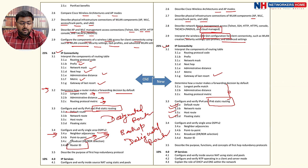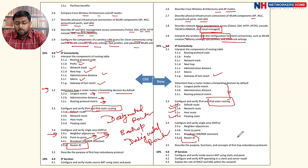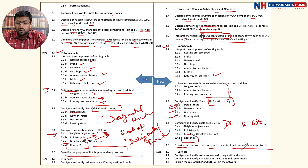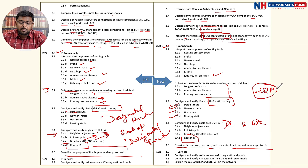The Router ID is a 32-bit identification number used to identify the router in the network and is also used for DR and BDR elections. We then describe the purpose and functions of First Hop Redundancy Protocols (FHRP), including HSRP (Hot Standby Router Protocol), which is Cisco proprietary.